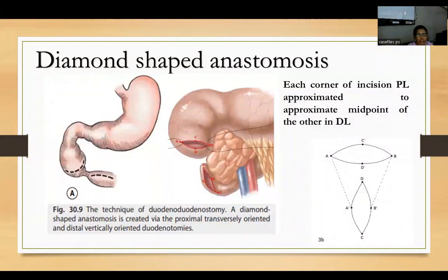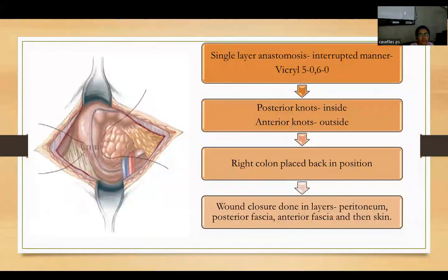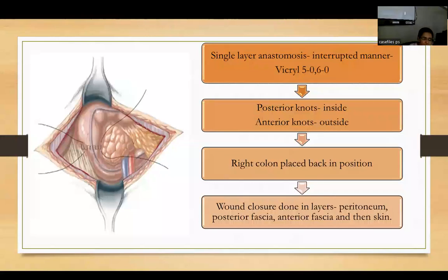For diamond-shaped anastomosis, each corner of the proximal incision is approximated to the midpoint of the distal incision, such that point C' meets C, D' meets D, B' meets B, and A' meets B. A single-layer anastomosis in an interrupted manner using Vicryl 5-0 or 6-0 is performed. Posterior layer knots are tied inside the lumen and anterior layer knots outside. The right colon is replaced and wound closure is done in layers: peritoneum, posterior fascia, anterior fascia, and skin.